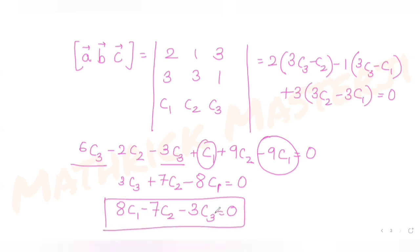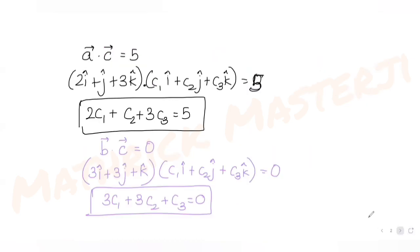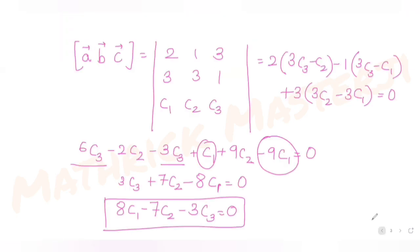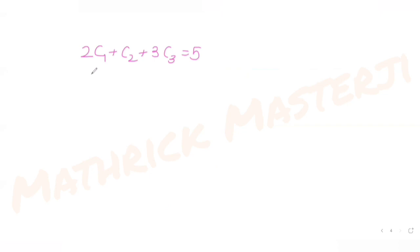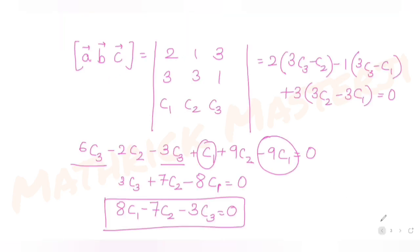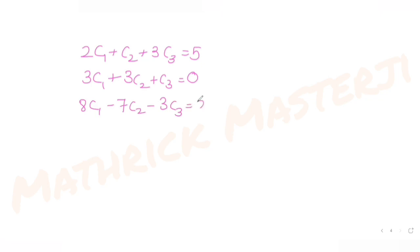We now have three equations: (1) 2c1 + c2 + 3c3 = 5, (2) 3c1 + 3c2 + c3 = 0, and (3) 8c1 − 7c2 − 3c3 = 0. Let's solve them to find c1, c2, and c3.